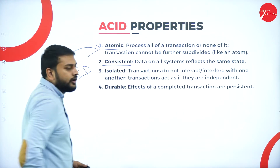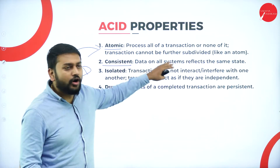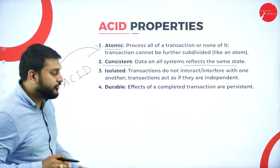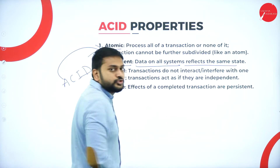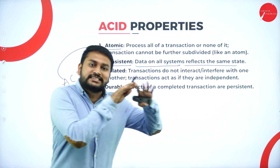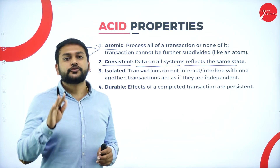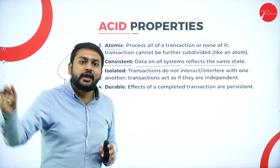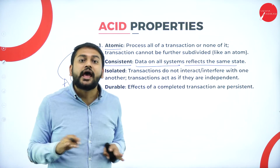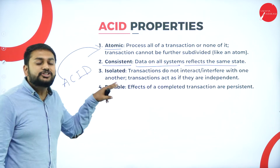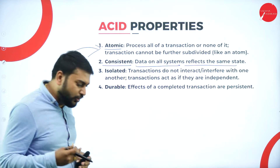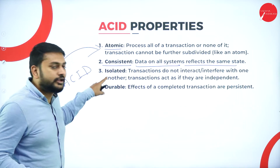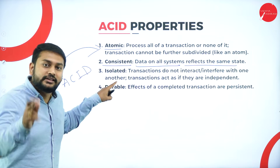The 'C' stands for Consistent. Consistent means the data on all the systems reflects the same state at a particular point of time. For example, if I withdraw 5000 from an ATM and it shows minus 5000 balance there, then in the system when I check my account, it should also reflect minus 5000. That inconsistency should not happen. The 'I' stands for Isolated — I should be able to execute multiple transactions without any interference.